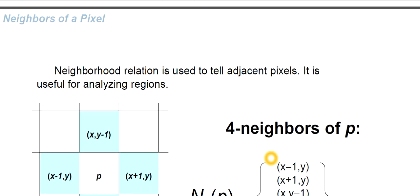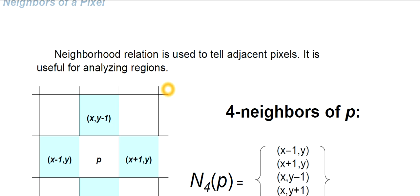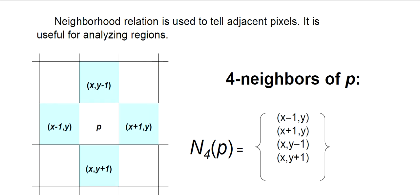What are neighbors? The neighborhood of a pixel — neighborhood relation is used to identify adjacent pixels. It is useful for analyzing regions. We find out the neighborhood or neighbors of a pixel because it helps us to analyze those regions. Consider this diagram. We have different types of neighbors. The first one is the four neighbors of P, where P is the pixel at coordinate x, y.